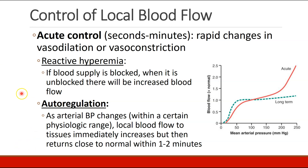The theory we should definitely understand is autoregulation, which says that as arterial blood pressure changes within a certain normal range, local blood flow to tissues will immediately increase but quickly return to normal within one to two minutes. For example, pressure at 100 goes up to 180, and blood flow to that tissue hasn't really changed at all — that's autoregulation. Obviously, if we drop pressure to zero or shoot it up to 250, we will see changes in blood flow, but within a normal physiologic range, autoregulation says that some tissues will not have changes in blood flow.